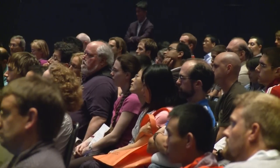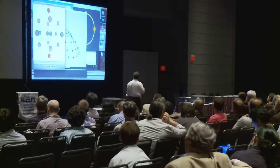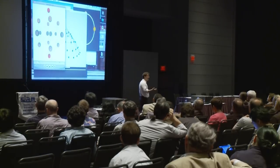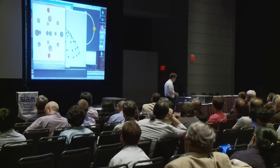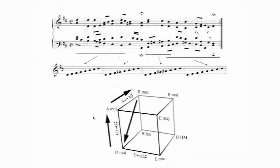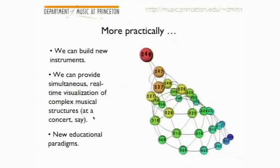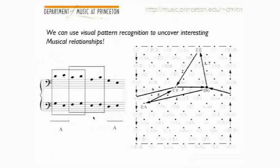People looked at it for hundreds of years without agreeing about how it worked. It turns out that there's a translation manual between elementary concepts of music theory — the kinds of things you teach to your 11-year-old beginning music student — and very advanced geometrical ideas, concepts like orbifolds, Möbius strips, or singular cones over the projective plane, things that mathematicians have been exploring in the last 50 years.